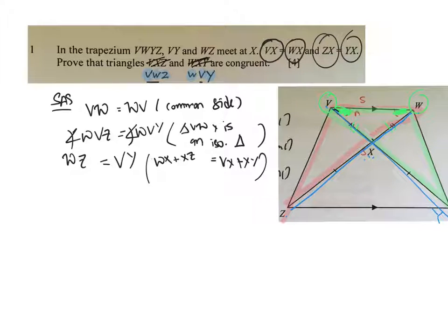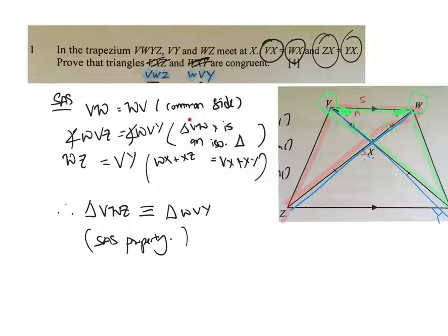Some of you throughout the GA had no conclusion. How do we conclude? We see that triangle VWZ is congruent to triangle WVY, and the reason is we are using the SAS property. Before I go on to question 2, one thing to point out: some of you in your reason for the isosceles triangle used angle in the same segment. There's no circle here, so angle in the same segment is a property of a circle, not a triangle.